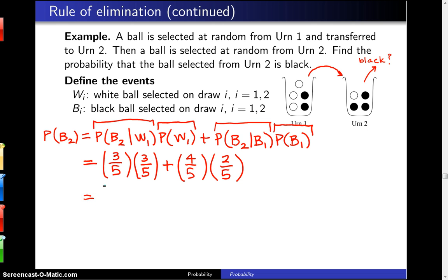When you work out the arithmetic, this is 17 over 25, which is 0.68. So that's actually a fairly likely event to occur.